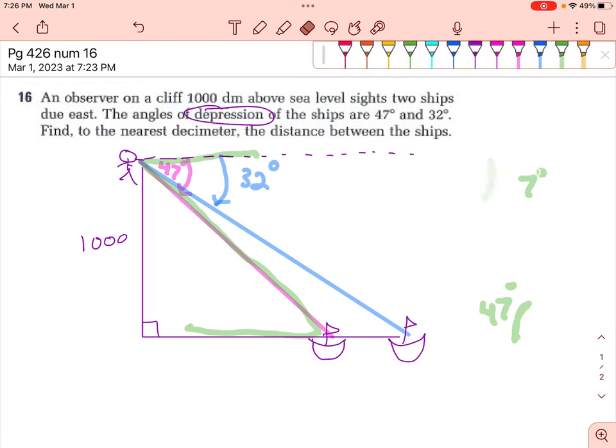Okay, so what we're going to do is we're going to take this pink 47 degrees angle from up here, and we are going to move it right down here because we learned about parallel lines. And we're going to do the same thing with this blue 32 degree angle. We're going to create this angle right here that is also 32 degrees.